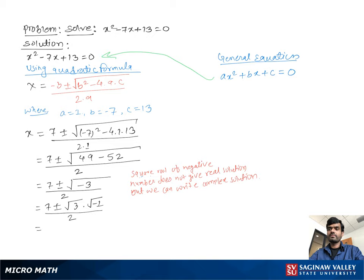Then we can write 7 plus or minus the square root of 3 times i, over 2, where i denotes the square root of negative 1. Therefore, x equals 7 plus the square root of 3 times i, over 2, or x equals 7 minus the square root of 3 times i, over 2. These are the two solutions.